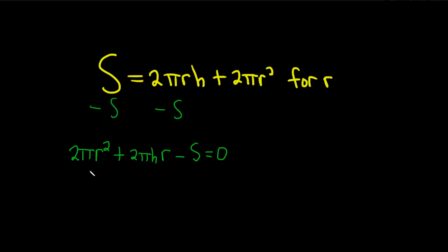So you can think of this as something like ax² plus bx plus c equals 0, except instead of x, it's r. And now you can identify your a. Your a is going to be 2π. And then b will be 2πh. So b is equal to 2πh. And then c is just negative s.